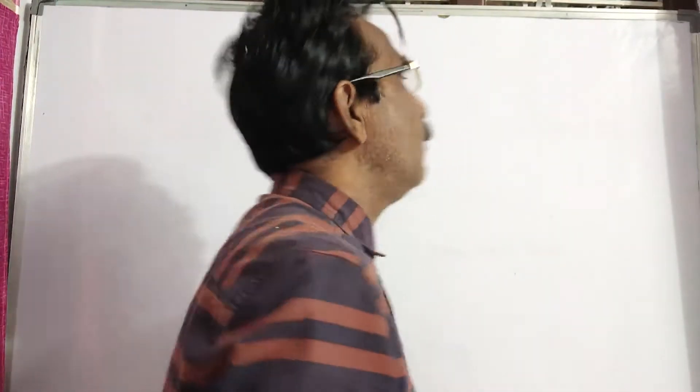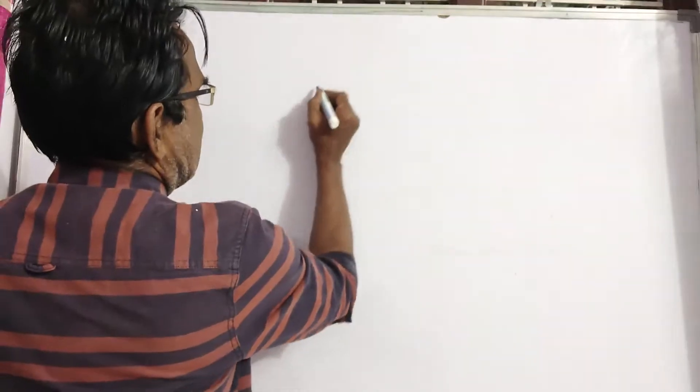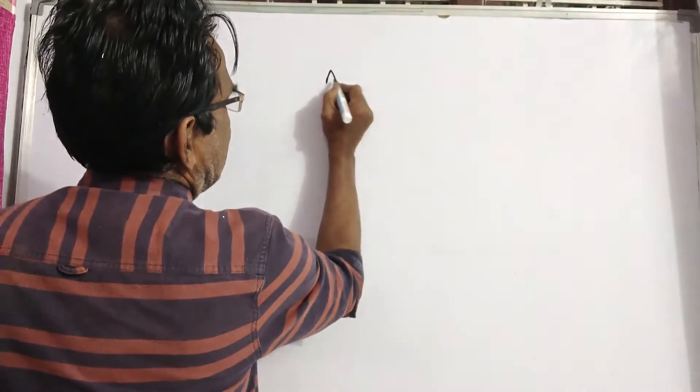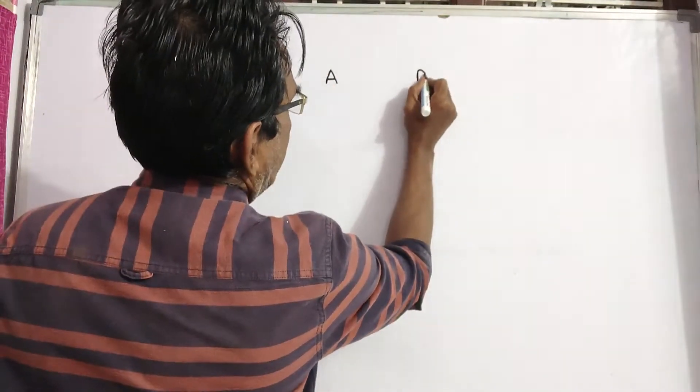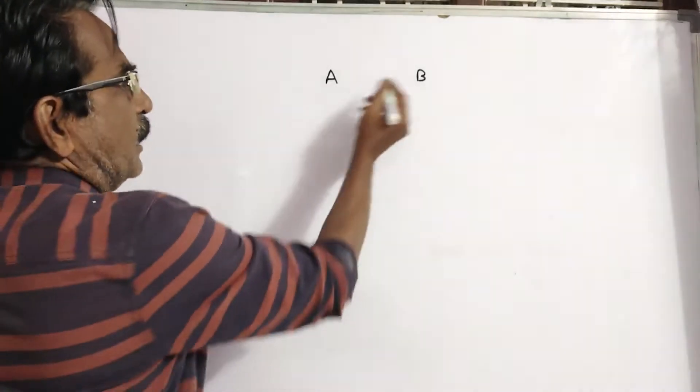See, in 10 years, A will be twice as old as B was 10 years ago. So let's say the present age of A is A, and present age of B is B. These are the present ages.